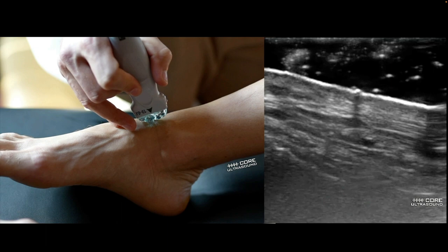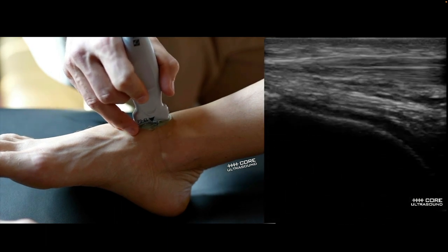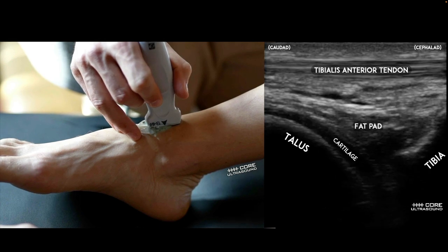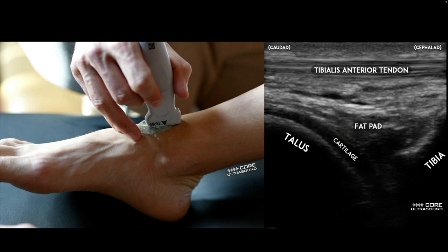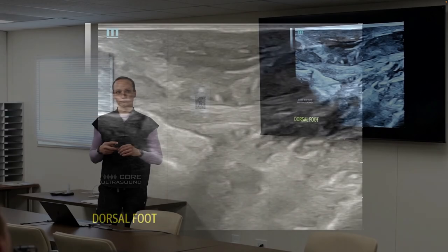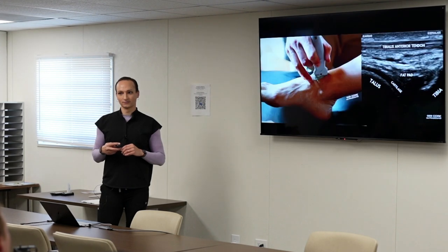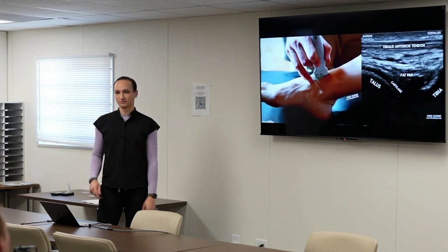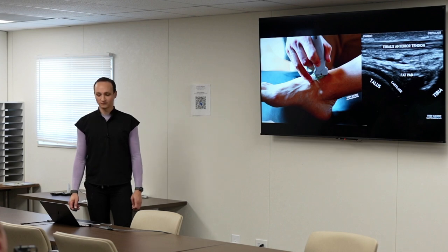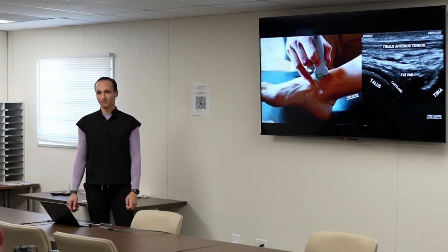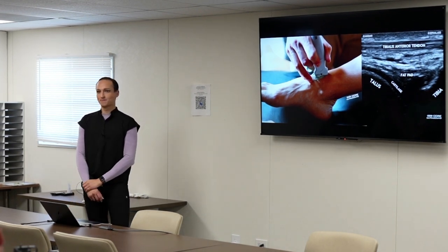Quick bonus section on ankles. Place the probe marker facing up in a sagittal orientation, looking at the tibiotalar region. There's a bit of hypoechoic material at the end of the talus — compressing it confirms non-compressibility, so that's cartilage. An important positioning tip: having the patient point their toe down plantarflexes the ankle and opens the joint space more. If doing a landmark-based approach, flex the great toe to track the tendon and get between structures, then point the toe to open the joint before entering.